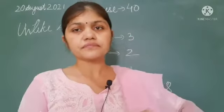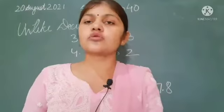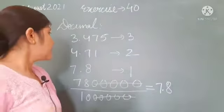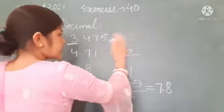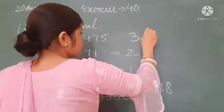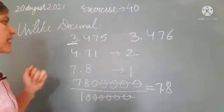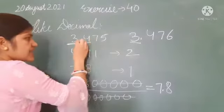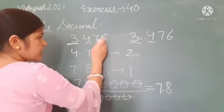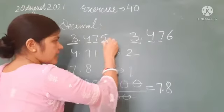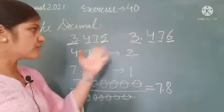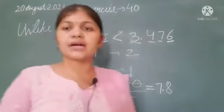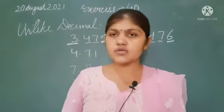Okay students, clear? Now comes the comparison — if we have two numbers given, how do we compare them, which number is bigger and which is smaller? First, we compare the whole part. For example, 3.476 — here 3 and here 3, so that doesn't tell us. Then we compare the decimal part: 4 and 4 are the same, 7 and 7 are the same, then here comes 5 and here 6. Between 5 and 6, the bigger is 6, so that number is bigger. Open mouth towards the bigger number, close mouth towards the smaller.